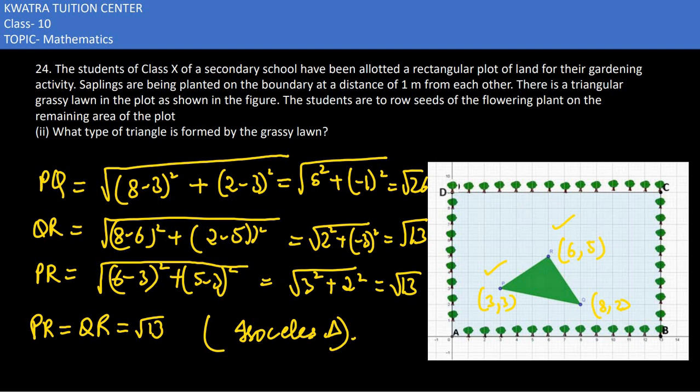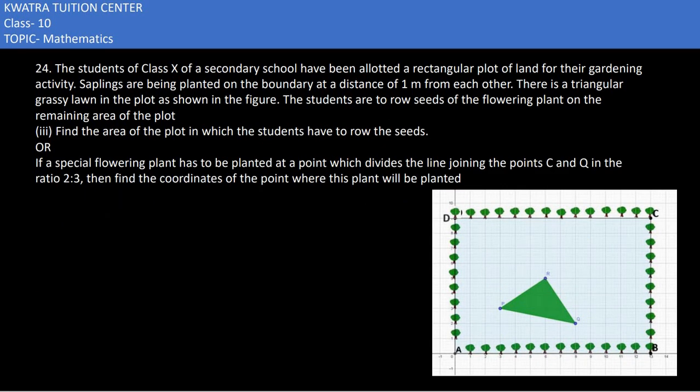In the third part, it says find the area of the plot in which the students have to row the seeds. So in this area they have to do the rowing, plant all the seeds.